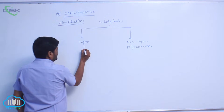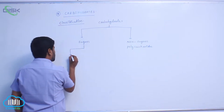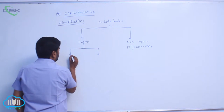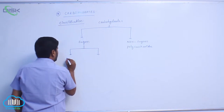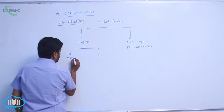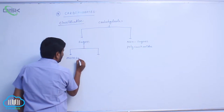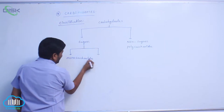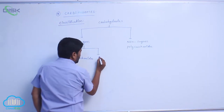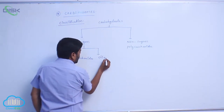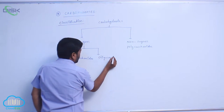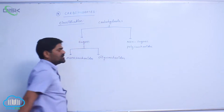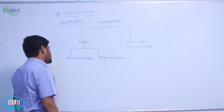Sugars are again classified into two types: one is monosaccharides, and the second one is oligosaccharides.